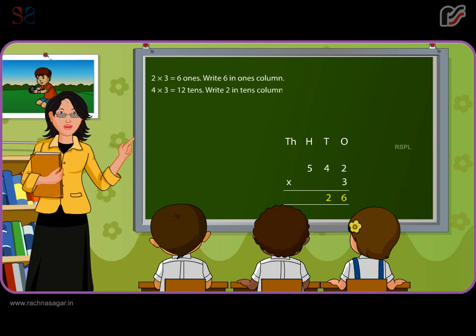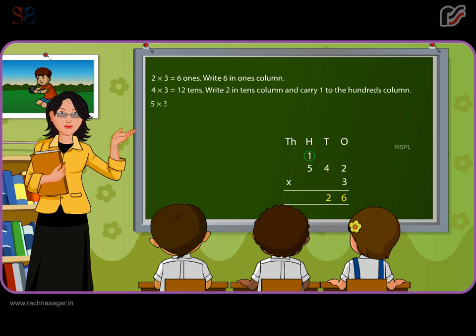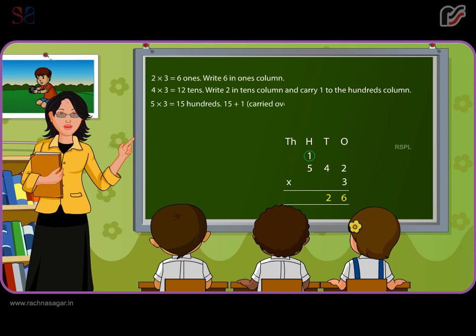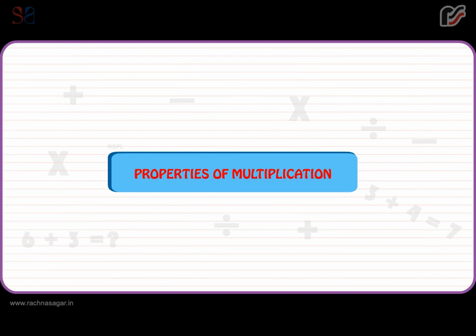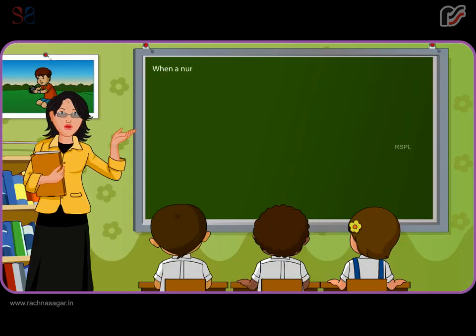Write 2 in the tens column and carry 1 to the hundreds column. 5 multiplied by 3 is equal to 15 hundreds. 15 plus 1 carried over is equal to 16 hundreds — write 6 in the hundreds column and take 1 to the thousands column.